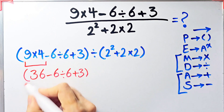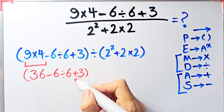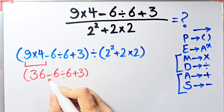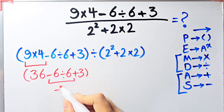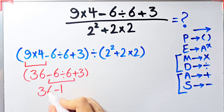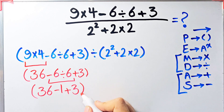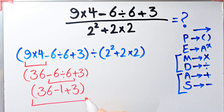In this step we have subtraction, division, and addition. First we do the division: negative 6 divided by 6 equals negative 1. Now we have 36 minus 1, then plus 3. 36 minus 1 equals 35, and 35 plus 3 equals 38.